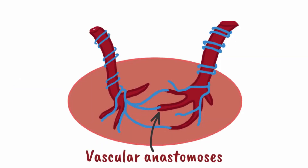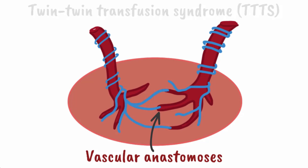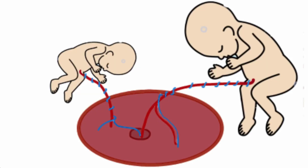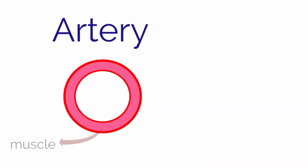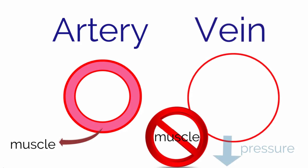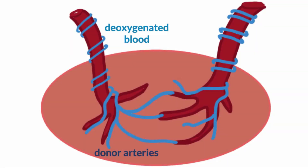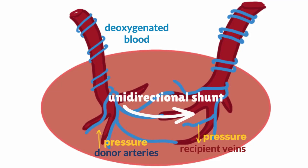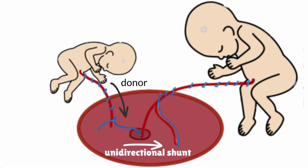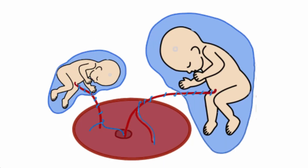The vascular anastomoses in the placenta also give rise to a complication unique to monochorionic twins: they facilitate twin-to-twin transfusion syndrome. With monochorionic twins, there can be deep arteriovenous anastomoses in the placenta. The artery is surrounded by muscle, maintaining blood pressure and flow, while veins have no muscular layer and are a low-pressure system. In an AV anastomosis, blood moves from the high-pressure artery to the low-pressure vein in a unidirectional manner, creating a unidirectional shunt, so blood is pumped from the donor to the recipient.